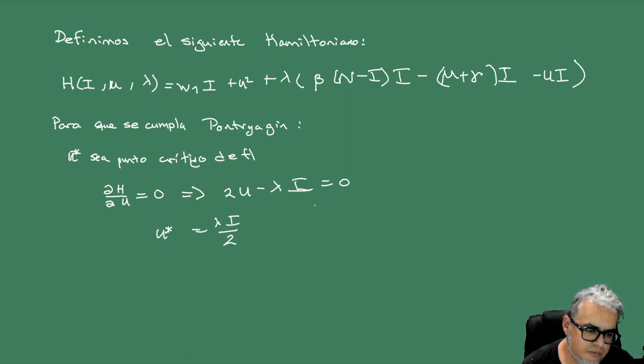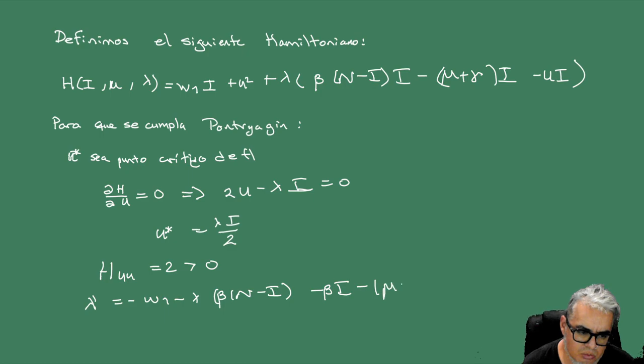Entonces si tomamos la segunda derivada, digamos H respecto de U dos veces, esto es 2, y esto es positivo, entonces probablemente es un mínimo. Si tomamos el sistema de las adjuntas, tenemos lambda prima igual a menos W1 menos lambda por beta por N menos I, menos beta I, menos mu más gamma, menos U, sujeto a que la lambda en T sea igual a cero.